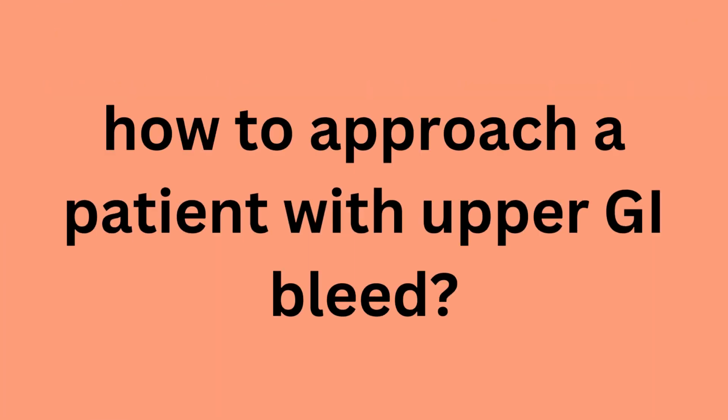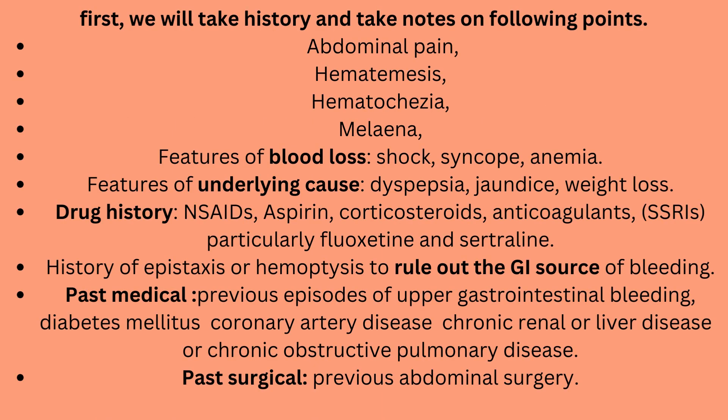How to approach a patient with upper GI bleed. First, we take history, noting: abdominal pain, hematemesis, hematochezia, melena, and features of blood loss including shock, syncope, and anemia.